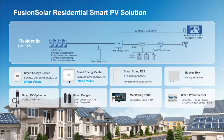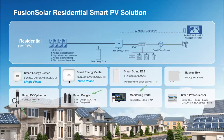Our inverters can also work in islanding mode — when the grid is down, they can power the loads in your home. To do this, you need a device called the backup box. On the DC side, for the PV modules, you can use these optimizers, up to 450 W maximum power of the PV module. For communication purposes, we have the smart dongles. For monitoring and commissioning, we have the Fusion Solar app and monitoring platform. And two types of power meters: single-phase and three-phase.